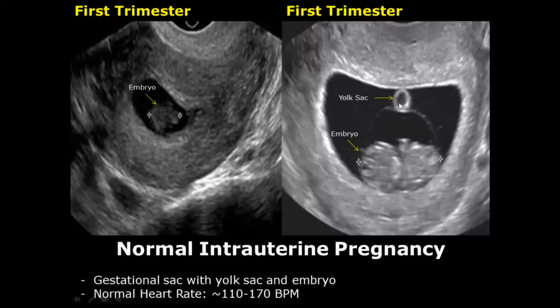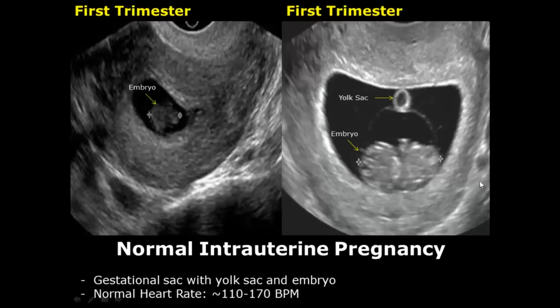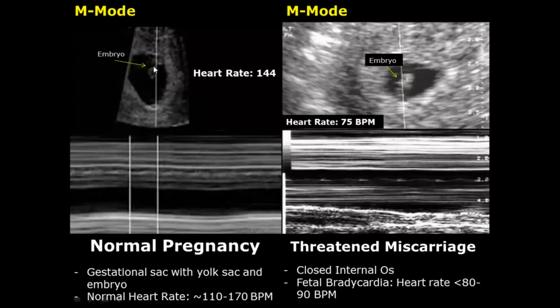The yolk sac is a circular structure with an echoic or hypoechoic center and a hyperechoic border, and an embryo containing a heartbeat that is usually between 110 to 170 beats per minute. The heartbeat usually reaches approximately 170 beats per minute at around 9 to 10 weeks of gestational age. We can use M mode to measure the heart rate of the embryo.